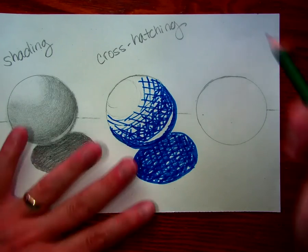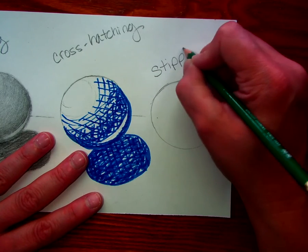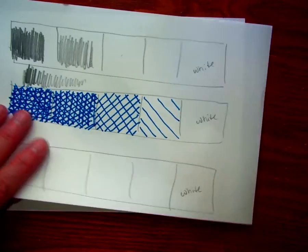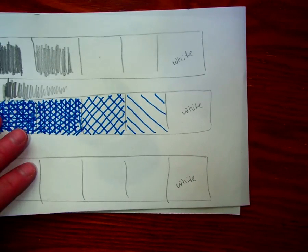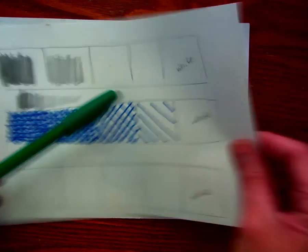The last one that we are going to do is called stippling, and it is going to be dots. Now, you can do cross-hatching again.